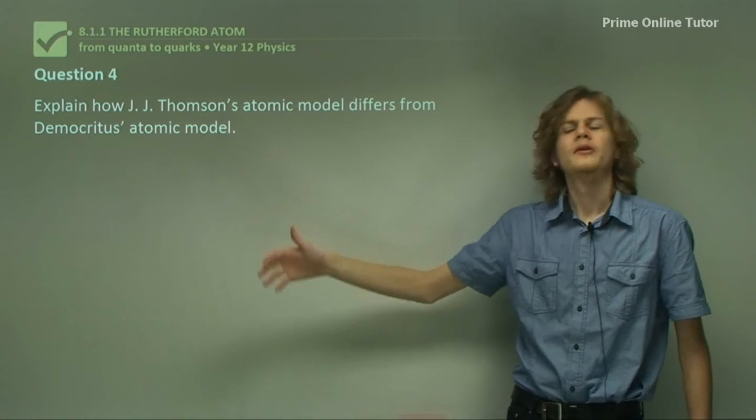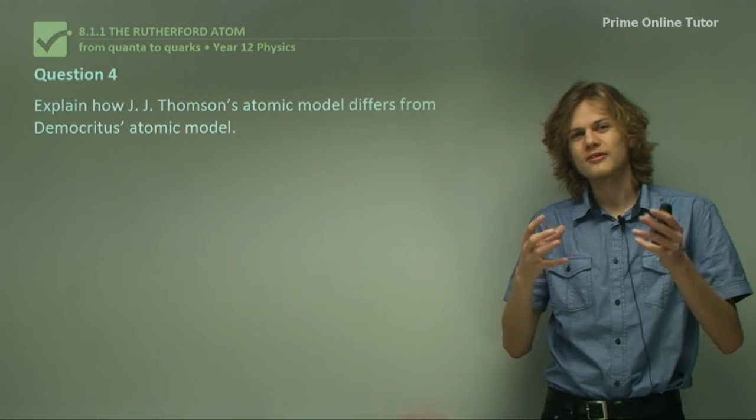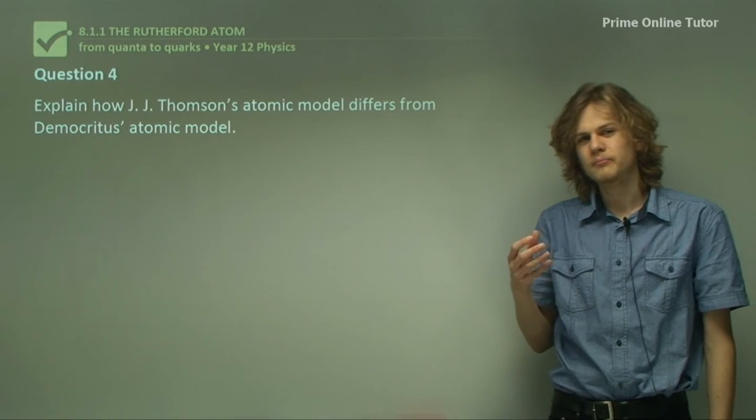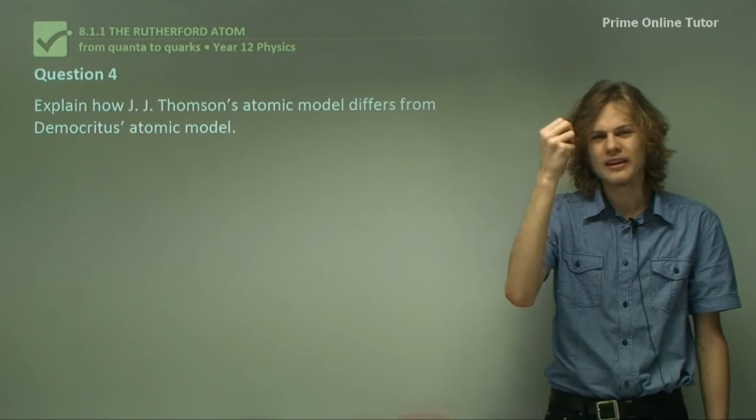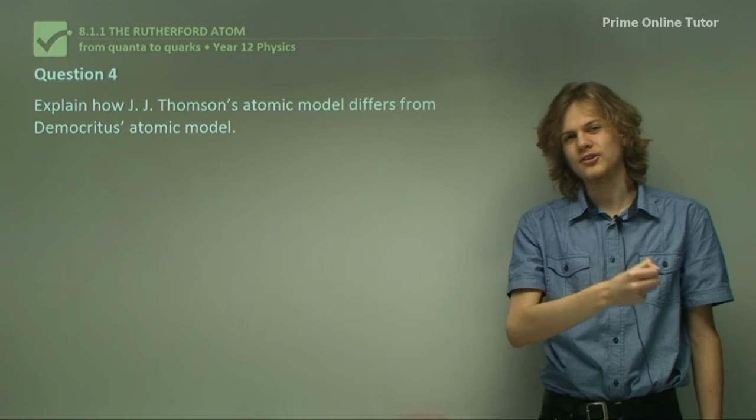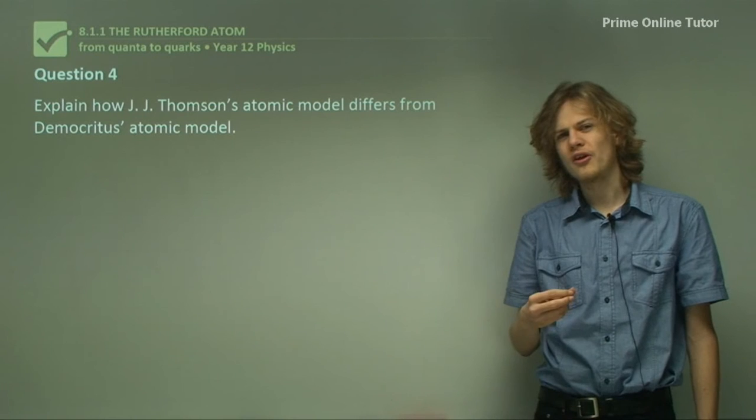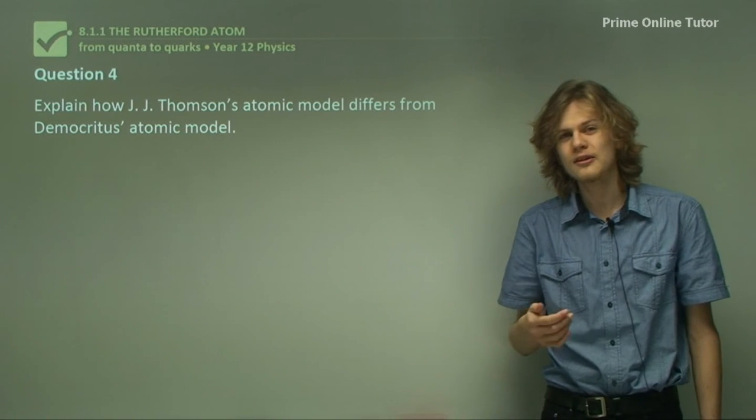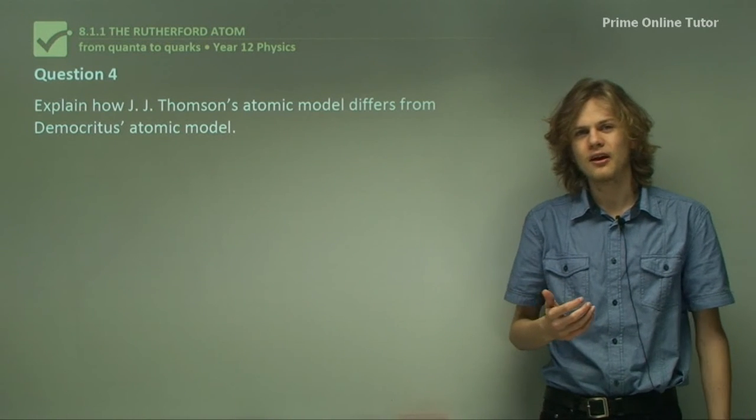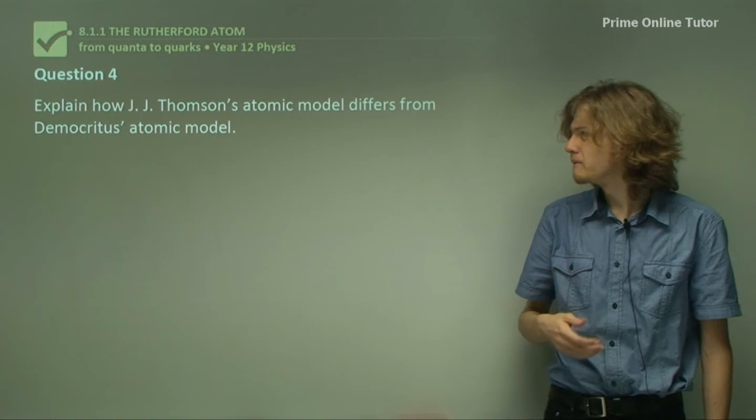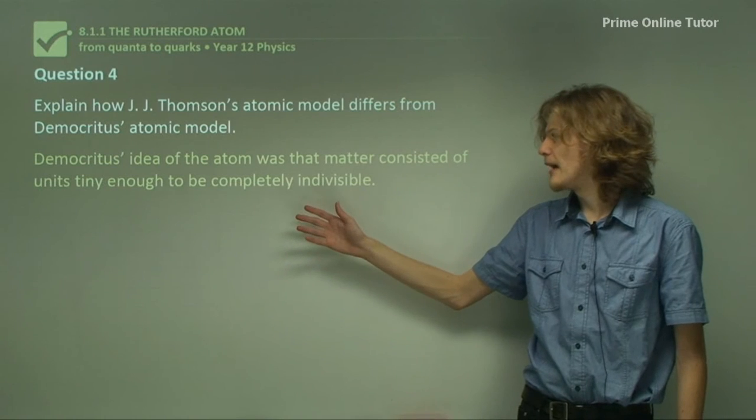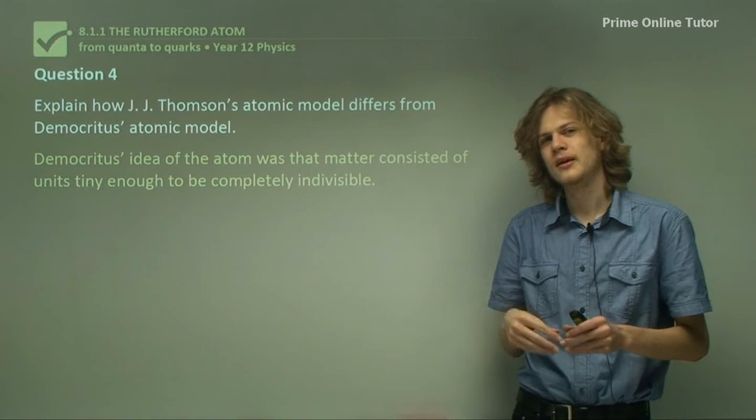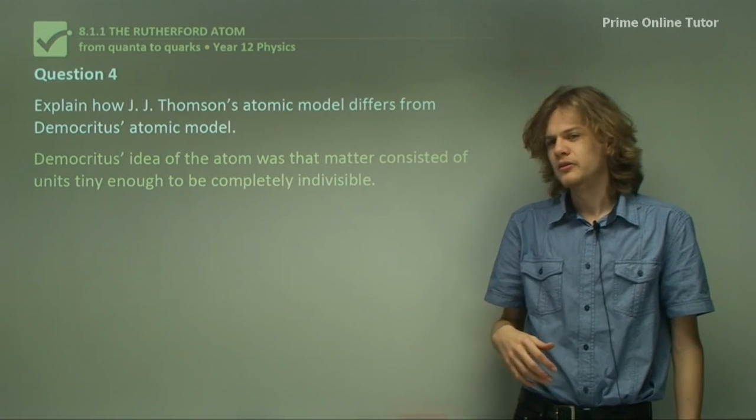Democritus' atomic model was the first model to use atoms, a small indivisible unit, and presumably there would be just a single, indivisible blob of matter. Thompson's atomic model, on the other hand, had to factor in electrons, which were newly discovered when he created it. So let's start off by writing a quick outline of where we're starting. Democritus' idea of the atom was that matter consisted of units tiny enough to be completely indivisible and uncuttable.